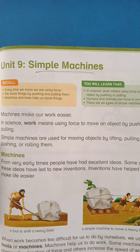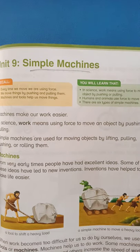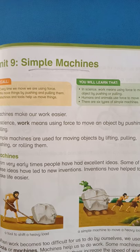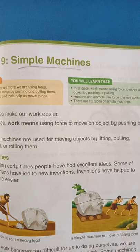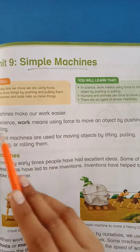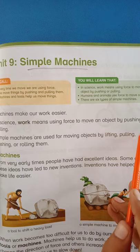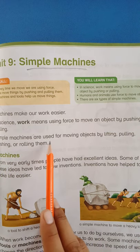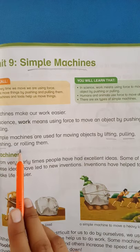Machine makes our work easier. Machines are of different types and do different kinds of work. Machines make our tasks easier — we can do our work quickly and easily. In science, work means using force to move an object by pushing or pulling. Simple machines are used for moving objects by lifting, pulling, pushing, and rolling them.